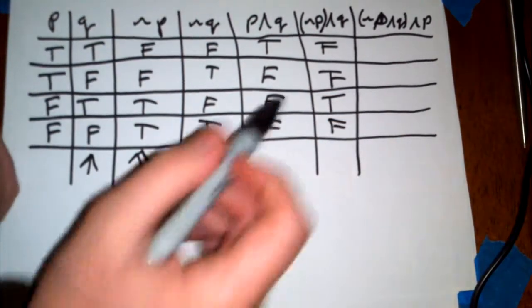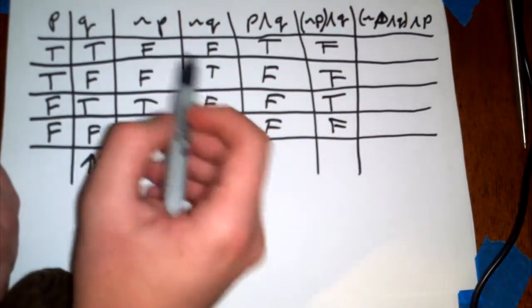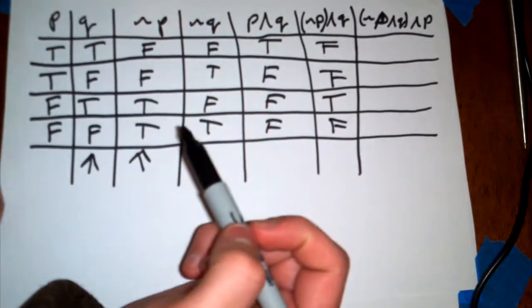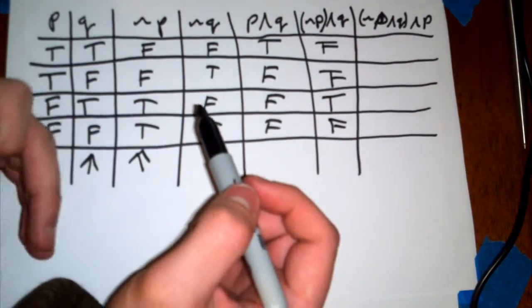So you can see that the order of operations goes this NOT P first, so you can always add more columns to your truth table if you're unsure how to do something complex.